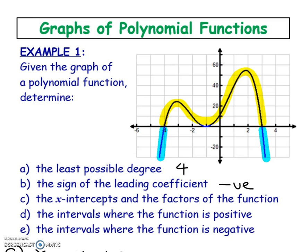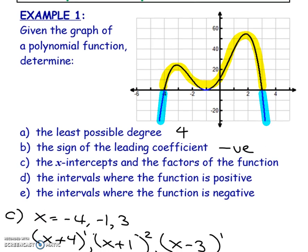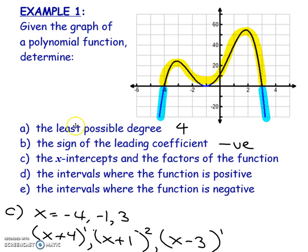Here's an example where they've given us a graph and we want to find the least possible degree. This is not a quadratic because it has a hump in the middle, but it could be degree 4. It could also be degree 6 or 8 if x-intercepts are doubled up. Since they want the least possible degree, it should be degree 4. I know it's a negative leading coefficient because even degrees should normally point upwards, but this one points downwards.